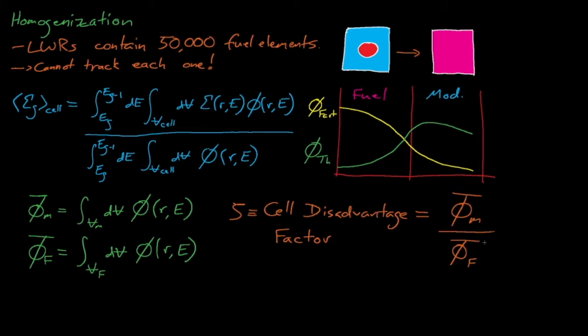the disadvantage factor is generally about 1. The mean-free path for fast neutrons is generally much, much larger than the dimensions of a fuel pin or a moderator region. So the fast flux doesn't really change that much between the fuel and moderator regions in one fuel element.